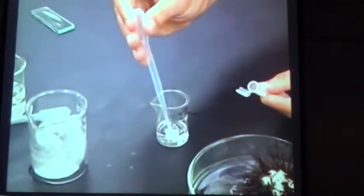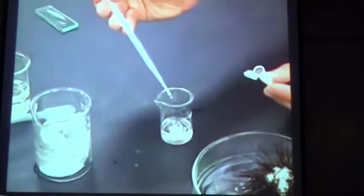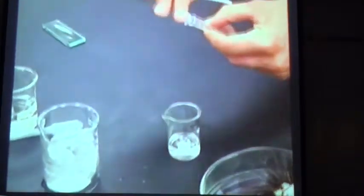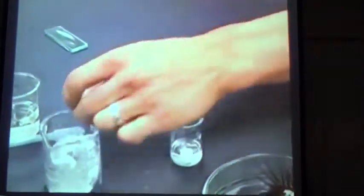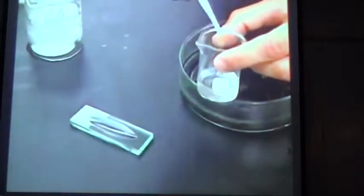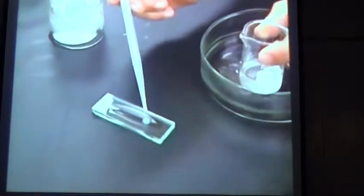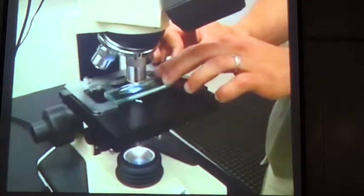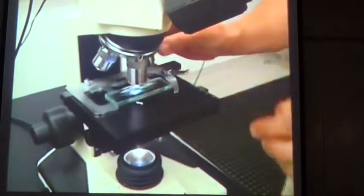Now dilute the sperm in seawater by placing two drops of sperm and 10 milliliters of seawater in a small beaker. Place one drop of the sperm solution onto your depression slide containing the eggs. You can now view the fertilization process under the microscope.